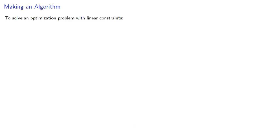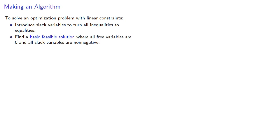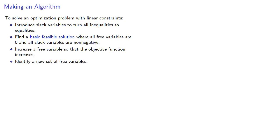To solve an optimization problem with linear constraints, we introduce slack variables to turn all inequalities into equalities, find a basic feasible solution where all free variables are zero and all slack variables are non-negative, increase a free variable so that the objective function increases, identify a new set of free variables, and lather, rinse, repeat.